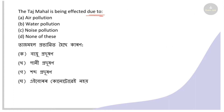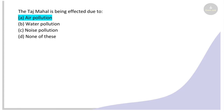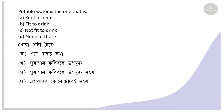Next: The Taj Mahal is being affected due to what? Options: air pollution, water pollution, noise pollution, none of these. The right answer is air pollution — because of acid formation, our biosphere is affected and the Taj Mahal is greatly damaged due to air pollution.